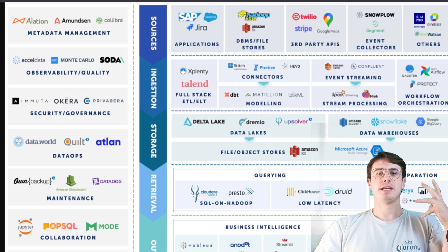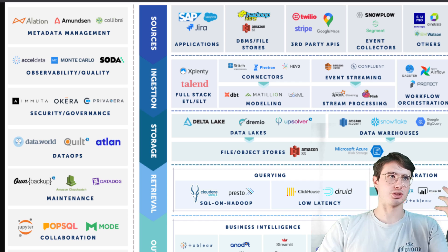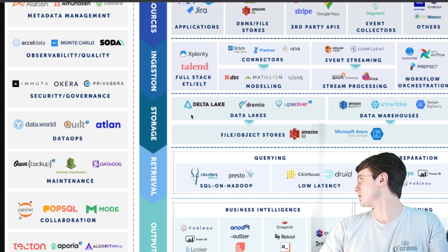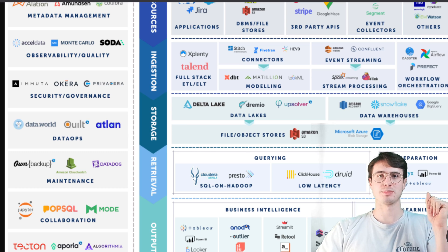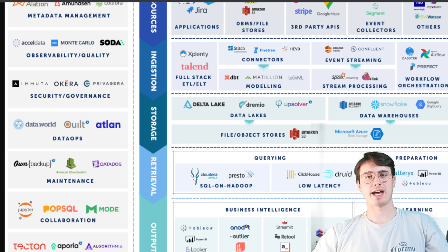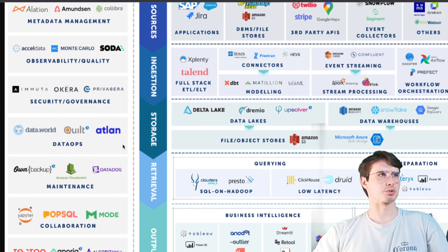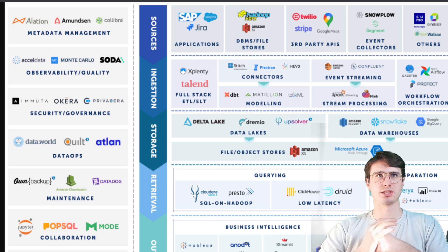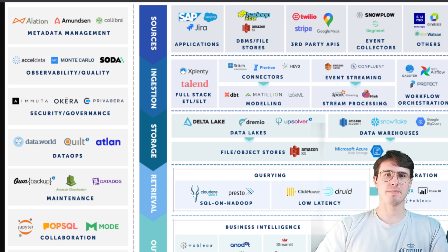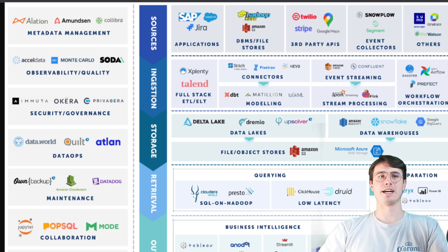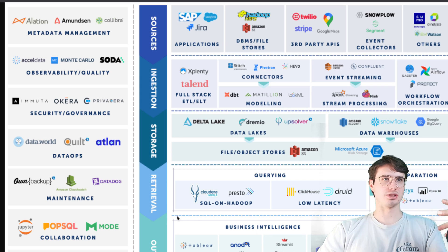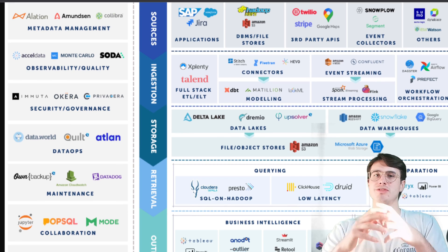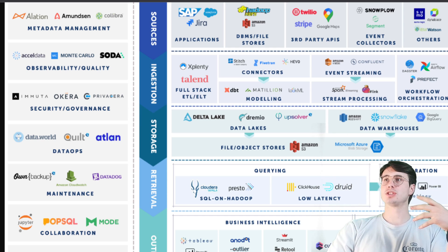After ingesting data, you integrate it into your back end, then you have your data storage — things like Snowflake, Postgres, or whatever SQL database you're using. After that, you'll have data processing and transformation tools. You take that raw data, store it, process it, and make sure it's in a defined format fitting your schema before querying it — doing data analysis, business intelligence, bringing it to Tableau, maybe a lightweight Streamlit app, different ways to visualize and serve data to end users.